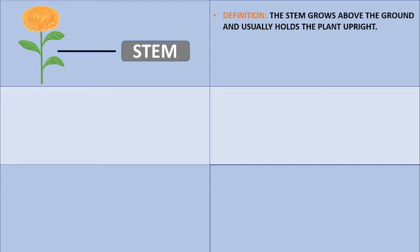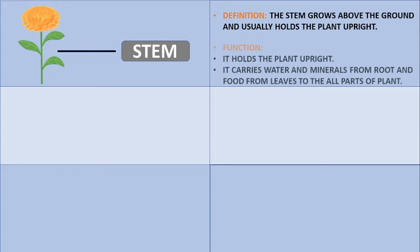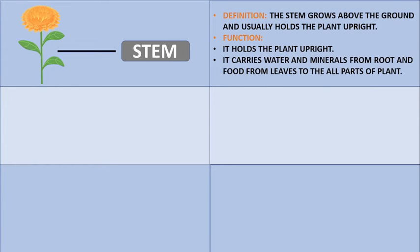Stem. The stem grows above the ground and usually holds the plant upright. It carries water and minerals from the root and food from leaves to all parts of the plant.